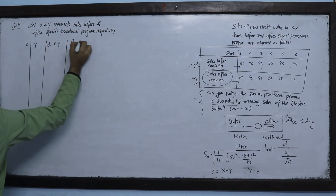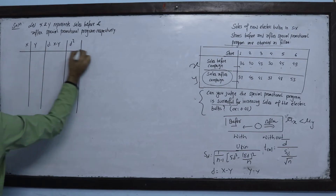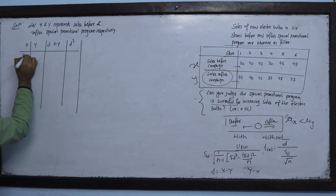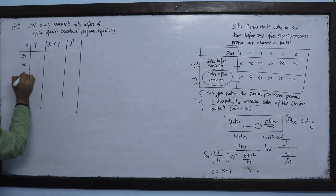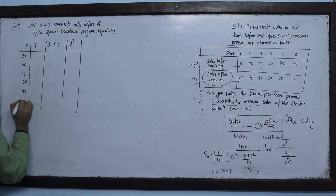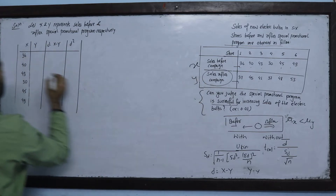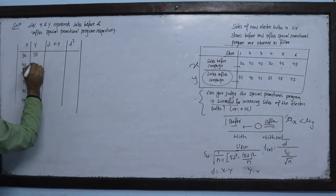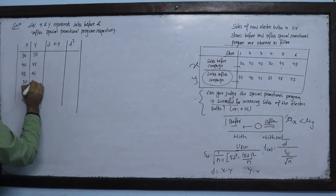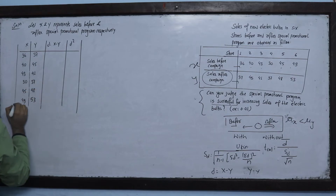The before sales values are: 36, 40, 43, 30, 45, 49. The after sales values are: 37, 45, 41, 37, 48, 53.